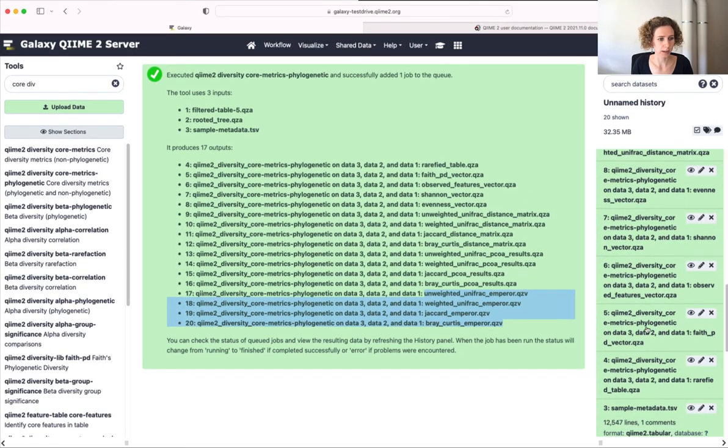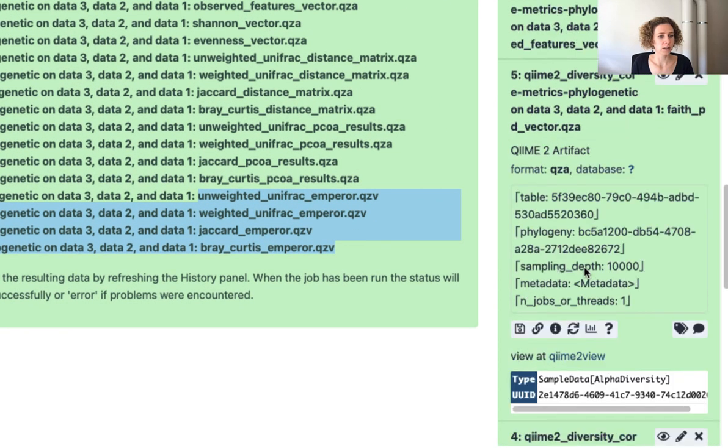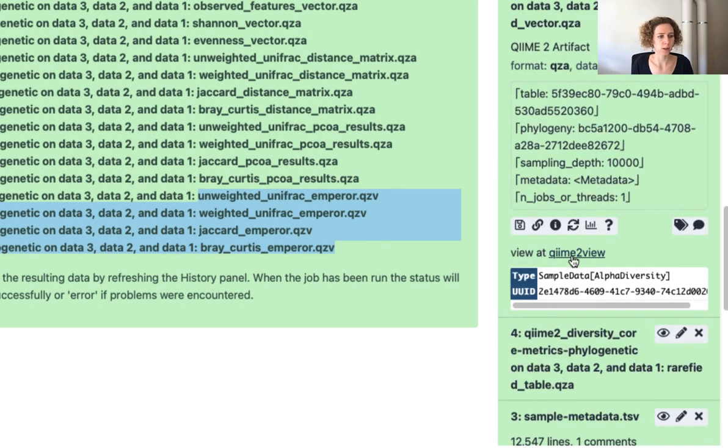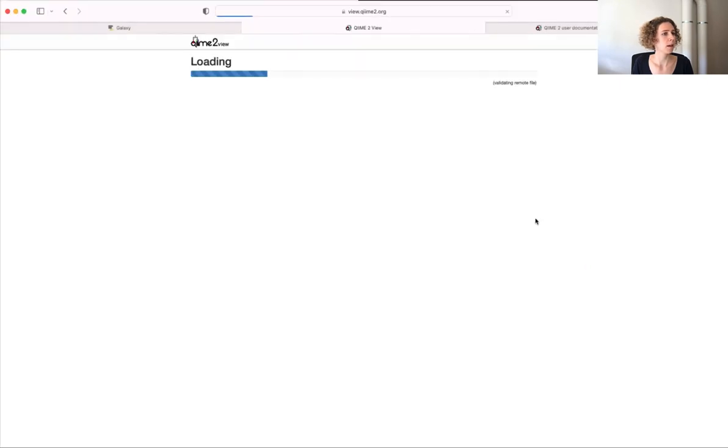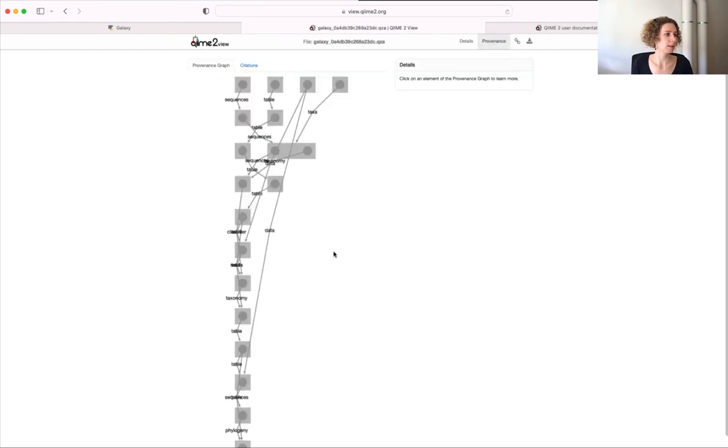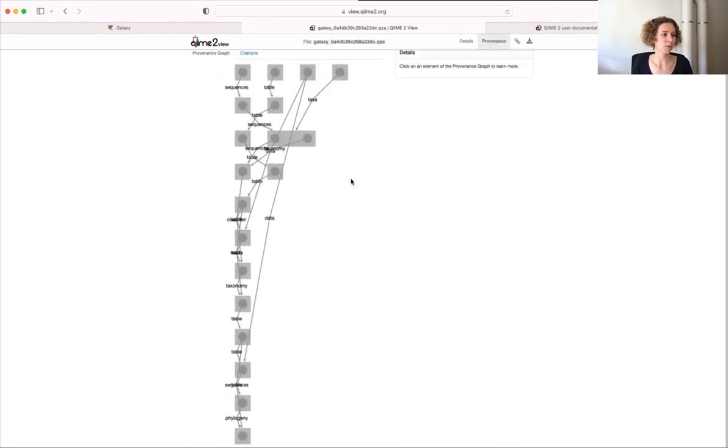Let's have a look at maybe this Faith PD vector. Again, we just hit QIIME2 view. I told you that this type is sample data alpha diversity. And let's look at the provenance of this artifact.